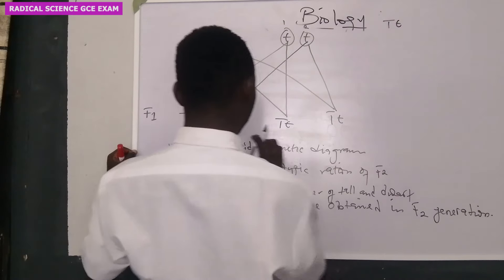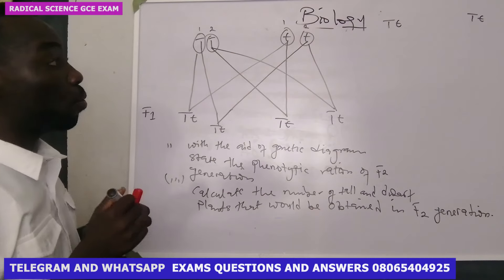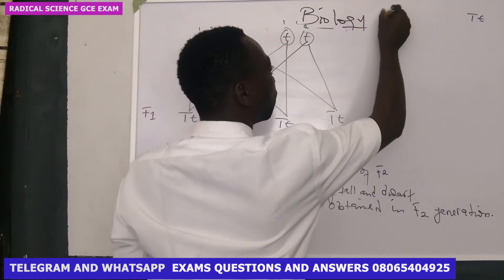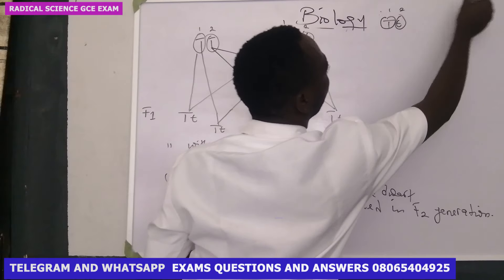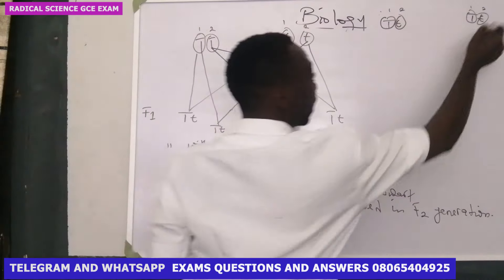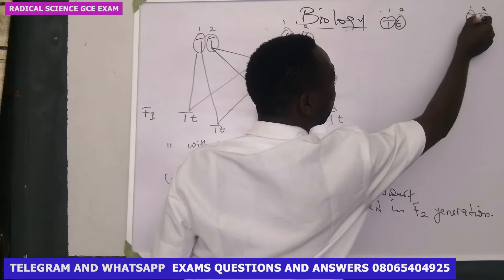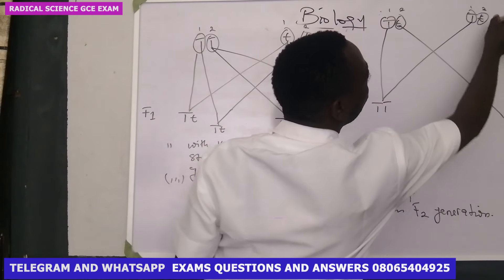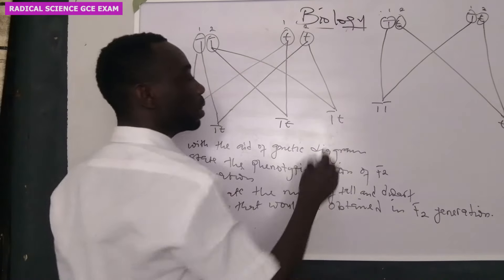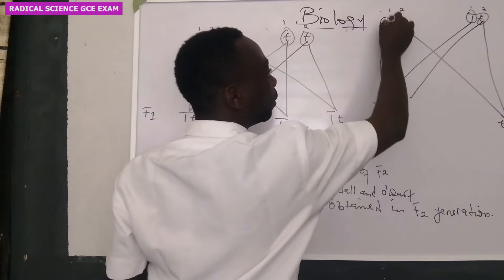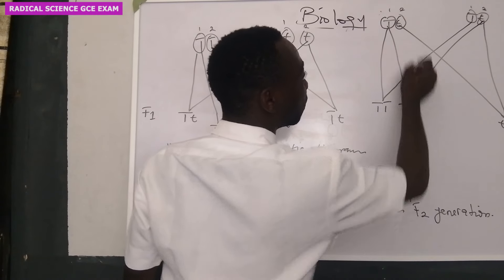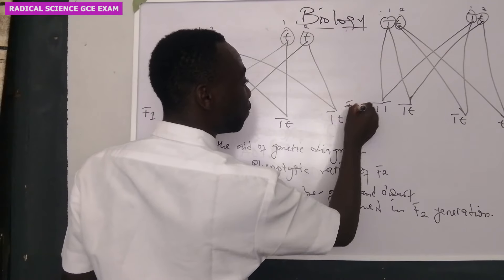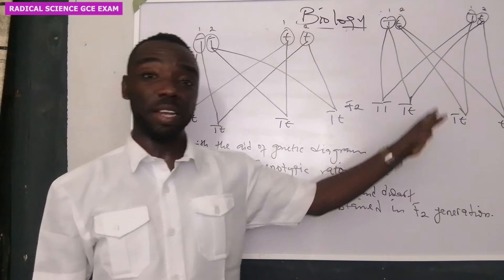Here we have T and small t, and we also have T and small t. When we have this now, we are trying to find our F2. You still do the same thing. One is with one — capital T, capital T. Two is with two — small t, small t. Then two is with one — capital T and small t. And here, two is with one — capital T and small t. So this becomes our F2. We have been able to find our F1 and our F2.